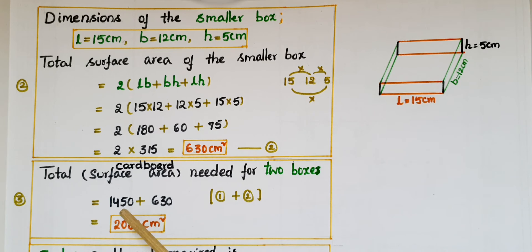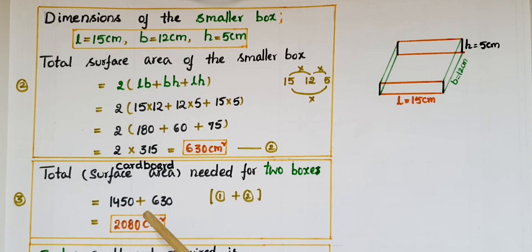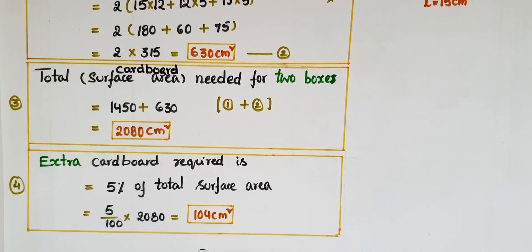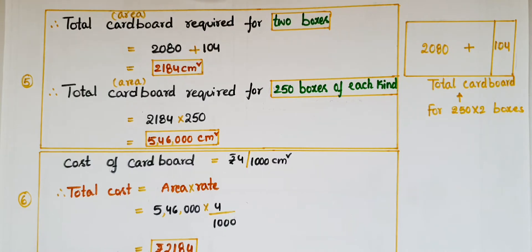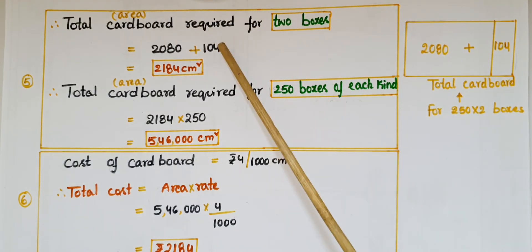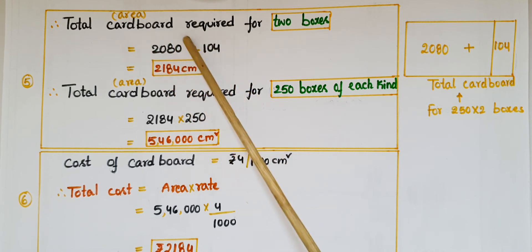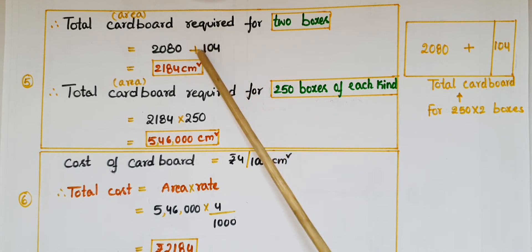Total cardboard needed for two boxes = 1450 + 630 = 2080 cm². Since 5% extra cardboard is required for overlaps, extra cardboard = 5/100 × 2080 = 104 cm². Therefore, total cardboard required for the two boxes including extra = 2080 + 104 = 2184 cm².